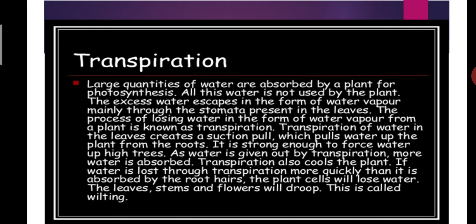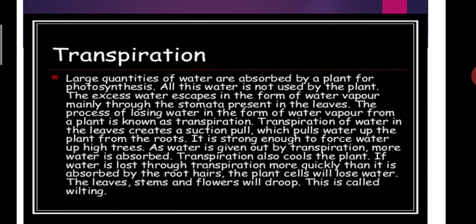Transpiration also cools the plant. If water is lost through transpiration more quickly than it is absorbed by the roots, the plant cells will lose water and the leaves, stems, and flowers will droop. This drooping is called wilting. So if there is a lack of water, plant cells lose water and the leaves, stems, and flowers wilt.